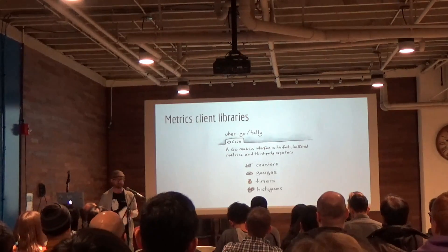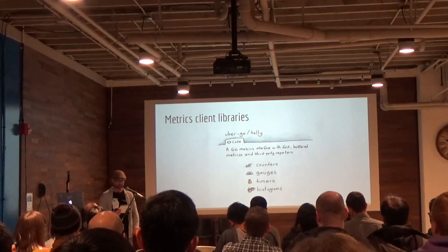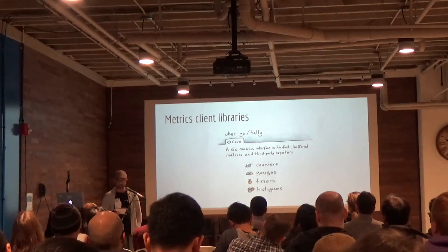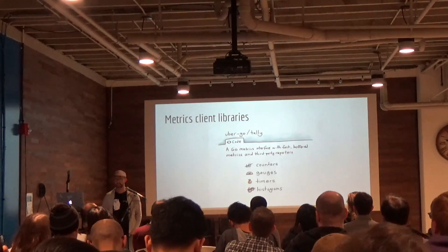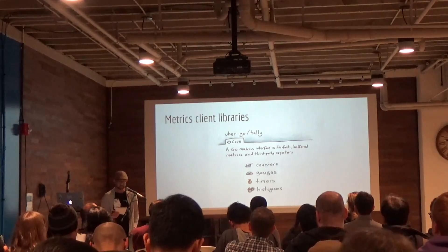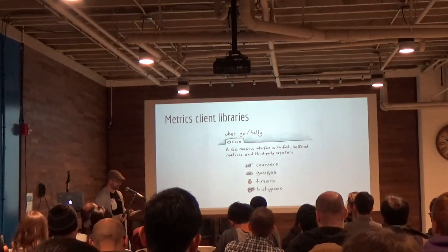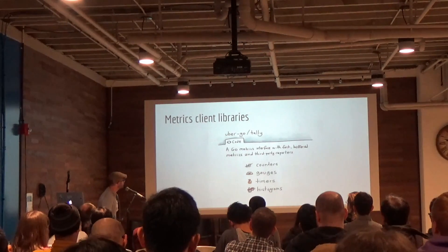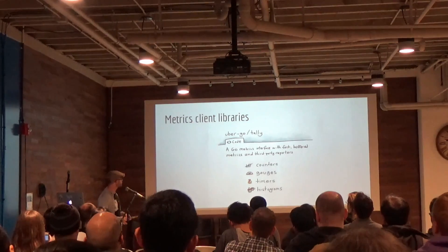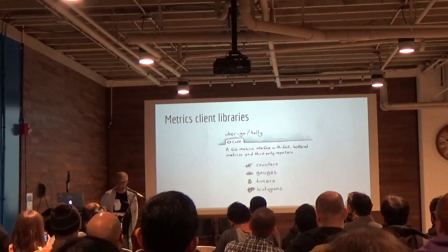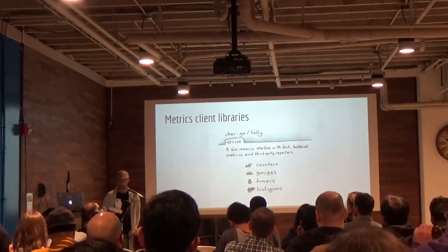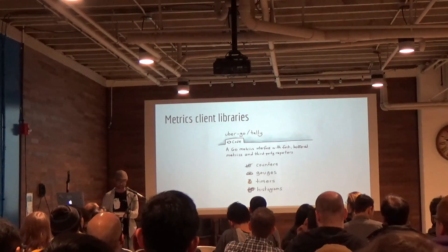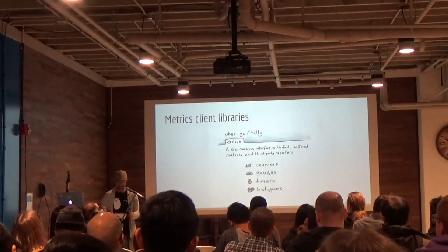Some of these systems provide native client libraries, and most can integrate with common wire formats. For Go developers, there are just a few general client libraries that allow us to distance ourselves from the details of the underlying instrumentation systems and protocols. And this is where we introduce Tally, a Go metrics interface with fast buffered metrics and third-party reporters. Tally offers instrumentation primitives and a hierarchical organization structure called the scope, and it takes care of buffering and transferring our metrics to one or more reporting backends.